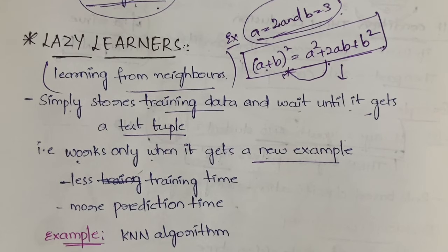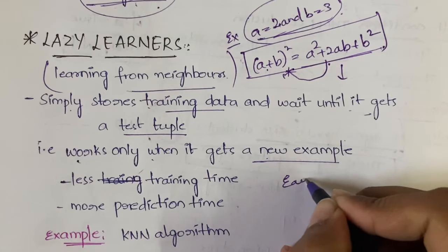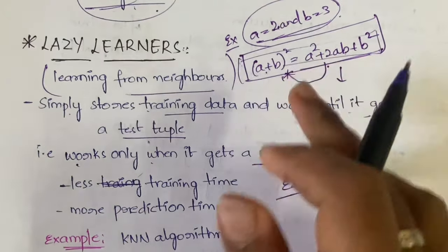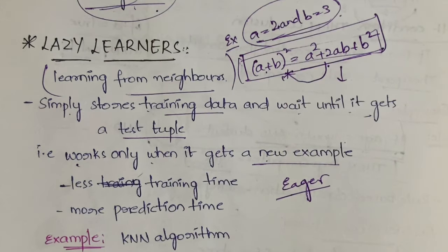But in case of eager learning, what will happen? As soon as you give the formula to the machine, it will learn the formula and do the analysis activity. Like, if any a, b values come, then I have to substitute a and b values, get the output, and display it.